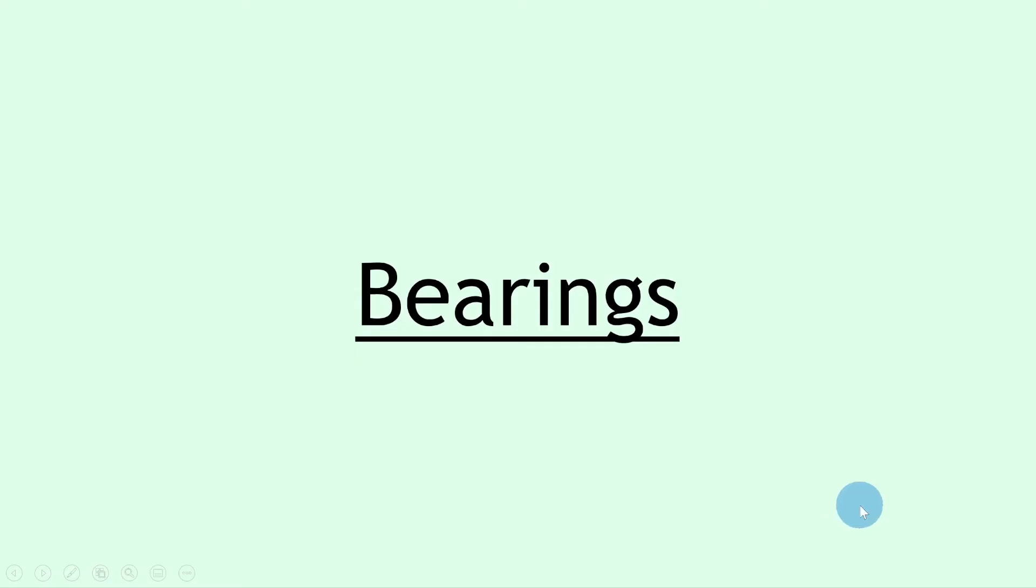Question one says to draw a line pointing on a bearing of 090. I'm going to draw a diagram here just like in the previous questions, but we're going to label the compass points as well as the bearings.